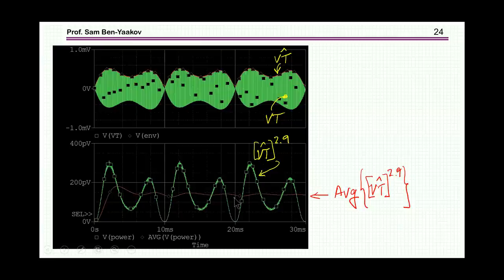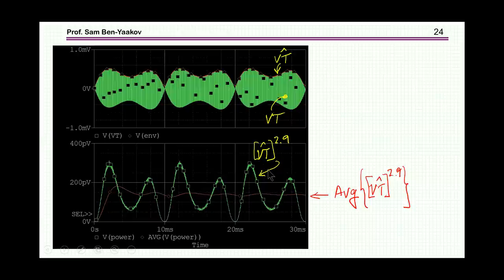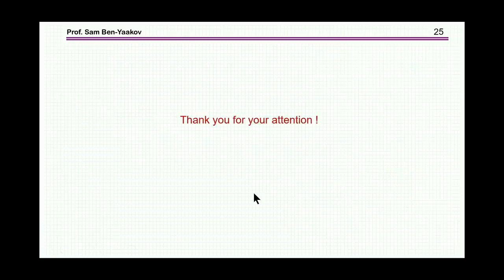Once we have the waveform, it is rather easy to extract the information that we need: the high frequency component of the inductor current, the high frequency component of the magnetic flux density variation, the envelope of which, and then doing the math to the power of beta according to the particular material that we are using. So this brings me to the end of this presentation. I hope you found it interesting and perhaps it will be useful to you in the future. Thank you very much.